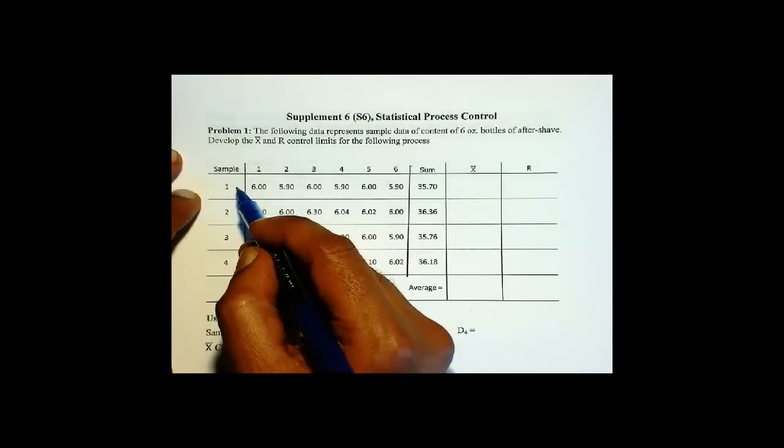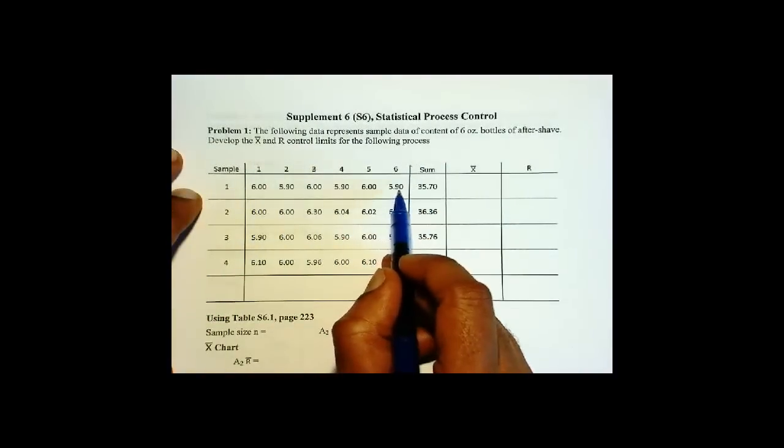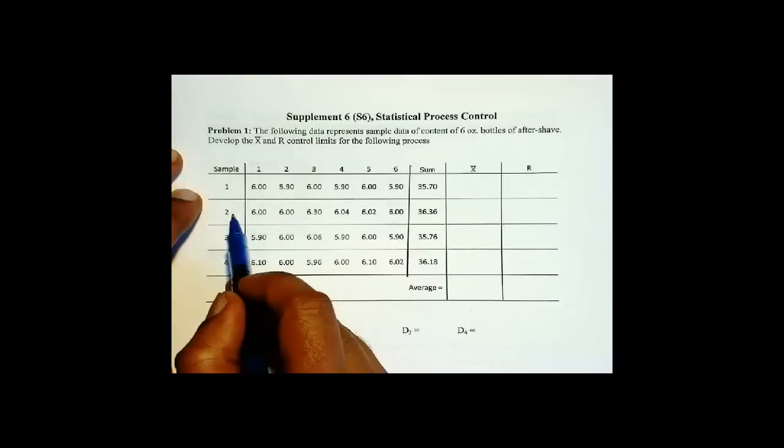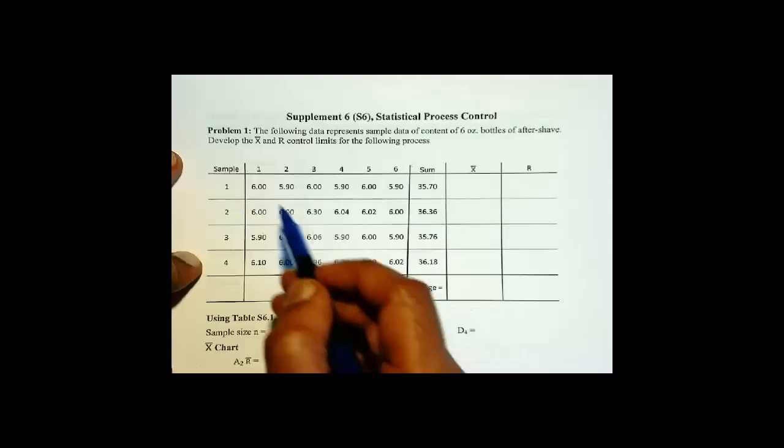We have sample 1 and there are 6 bottles, and the content of those 6 bottles are given here. This is sample 2, sample 3, and sample 4 taken in succession.